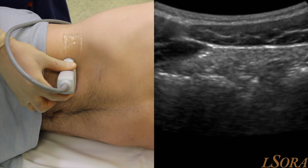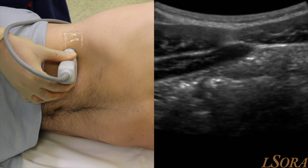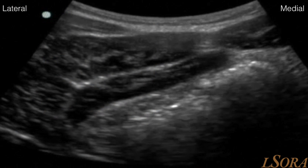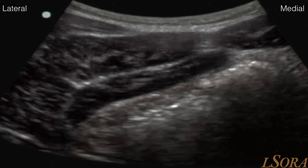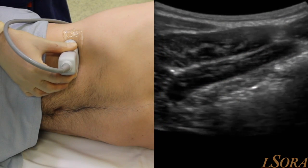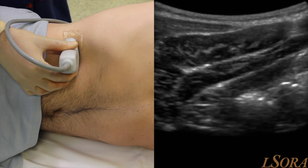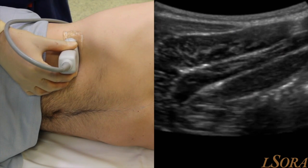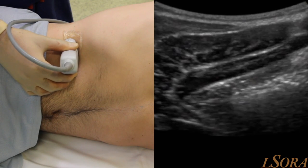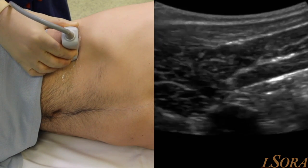This is a patient lying in the left lateral position and a curved array probe is placed over the anterior abdominal wall. As we slide the probe laterally, we can appreciate the rectus abdominis muscle centrally, the external oblique, internal oblique, and transversus abdominis muscles, as well as the abdominal cavity. As we continue to slide laterally, we appreciate the liver coming into view with the patient's respiration — you can see the liver edge coming down.